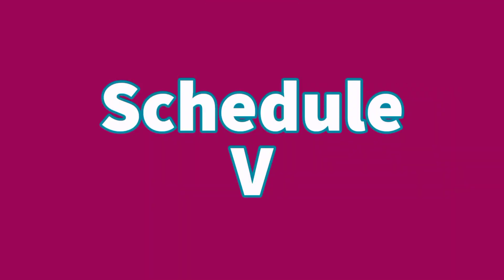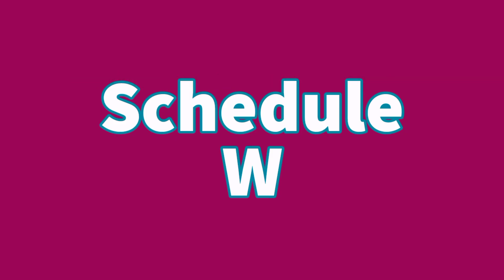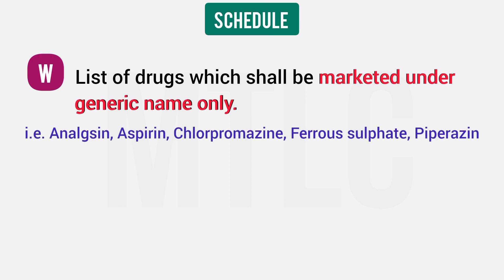Schedule V includes drugs listed by their generic names only — such as Analgin, Aspirin, Chlorpromazine, Ferrous Sulfate, and Piperazine. These are generic names, not brand names. This is very important to note.